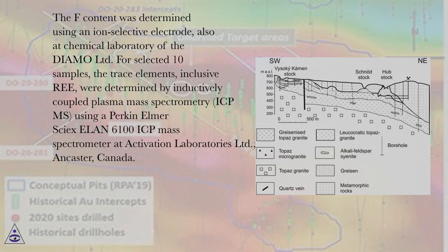The trace elements, inclusive REE, were determined by inductively coupled plasma mass spectrometry (ICP-MS) using a Perkin-Elmer SCIEX ELAN 6100 ICP mass spectrometer at Activation Laboratories Limited, Ancaster, Canada.